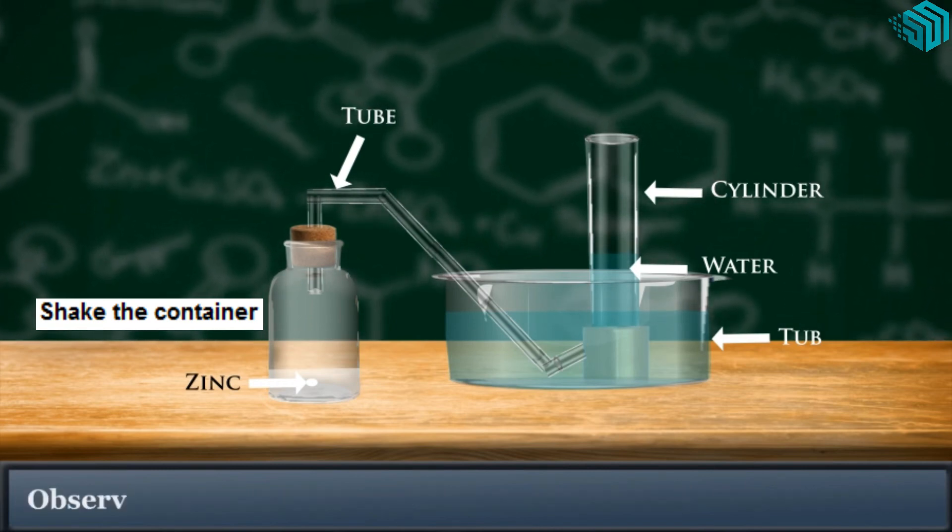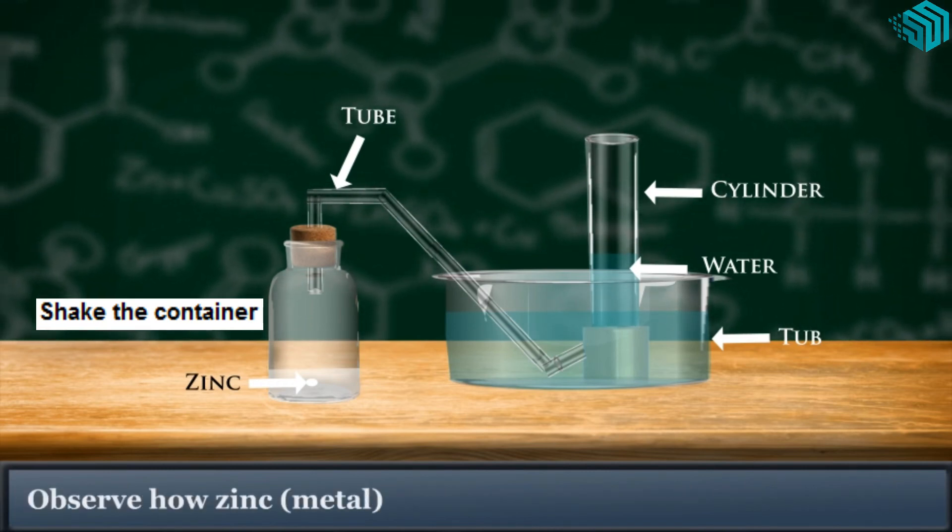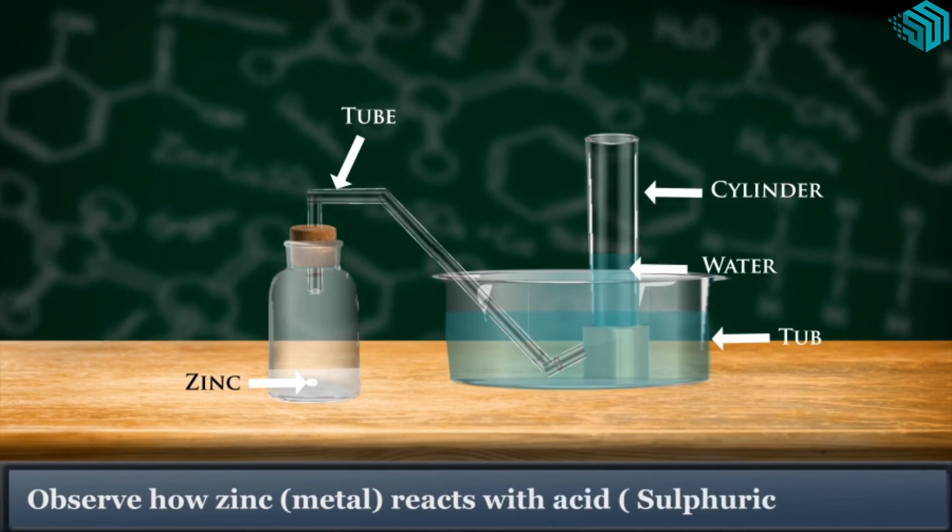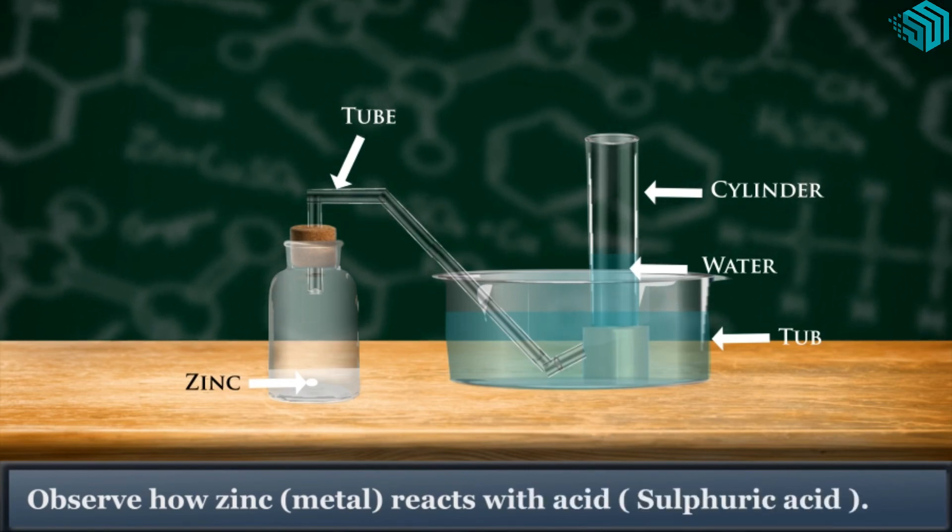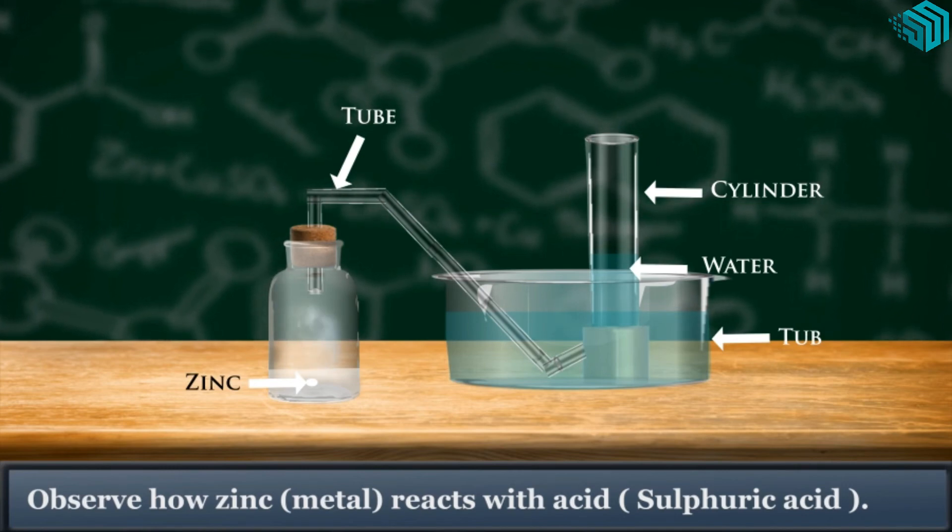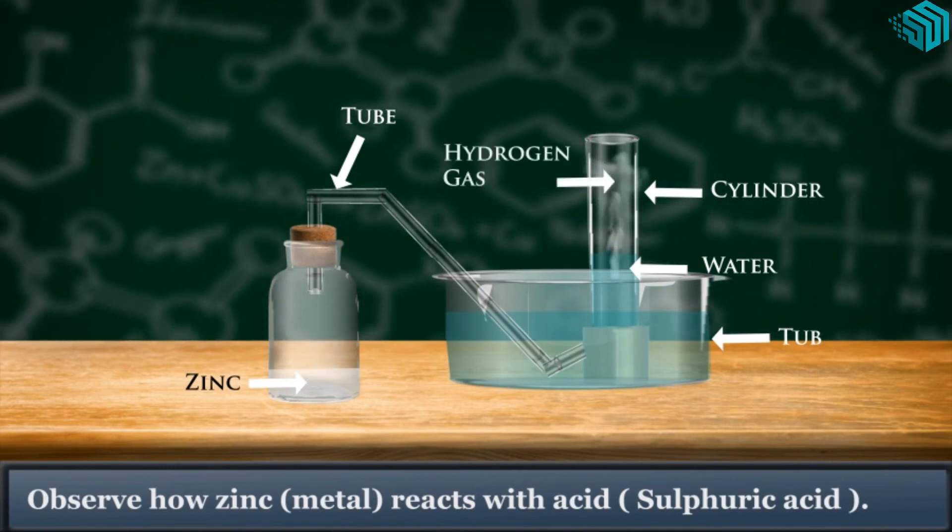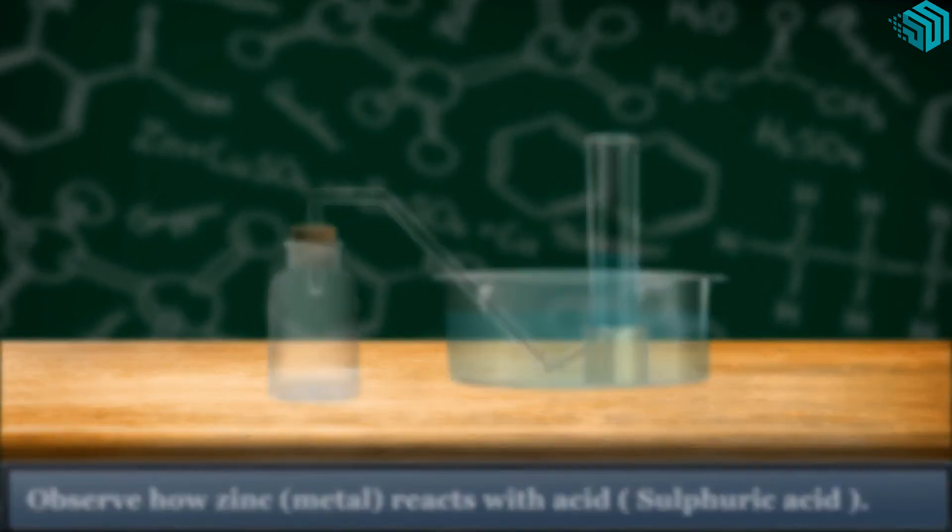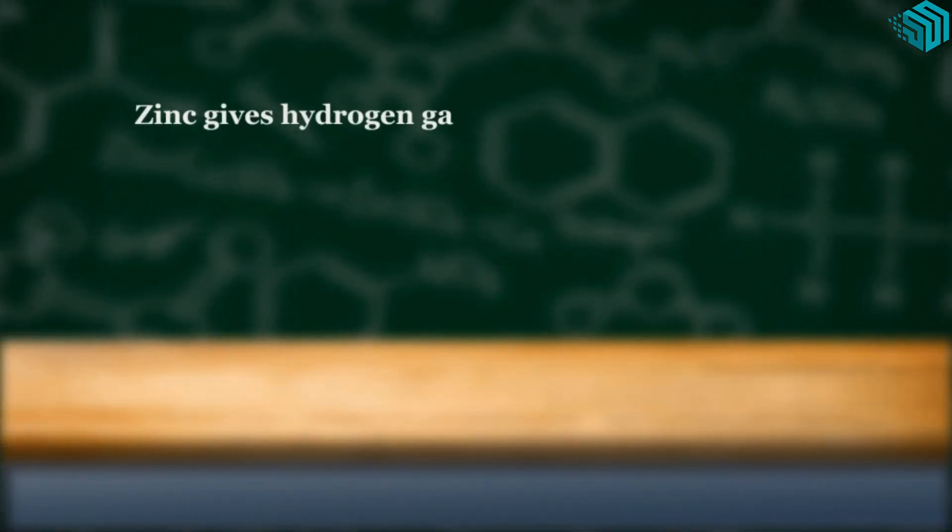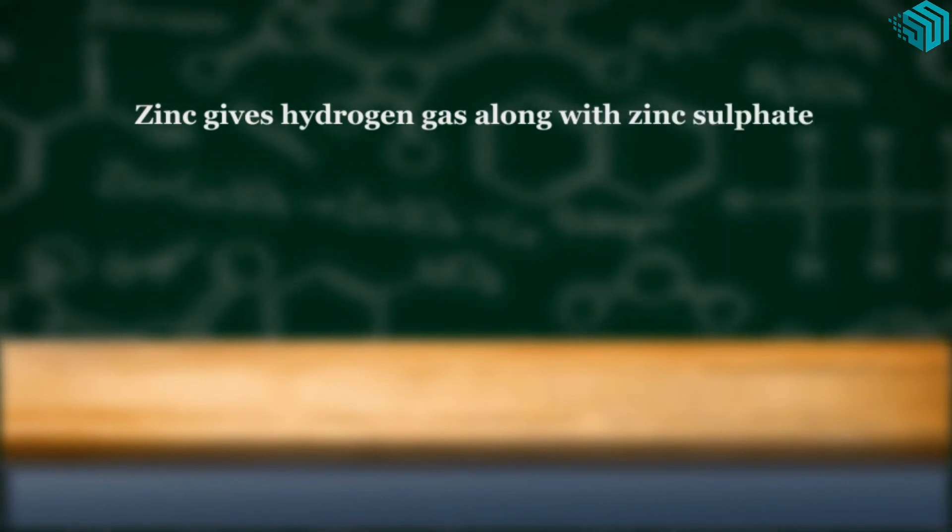Observe how zinc, which is metal, reacts with acid, which is sulfuric acid. Zinc gives hydrogen gas along with zinc sulfate when it reacts with sulfuric acid.